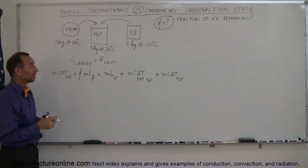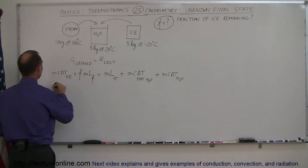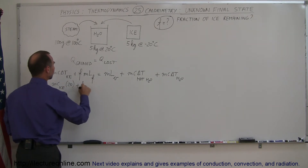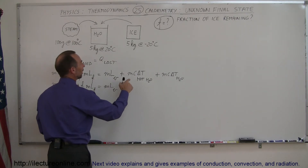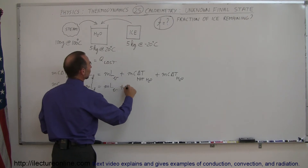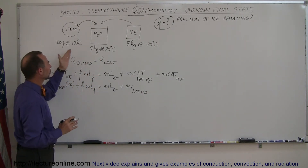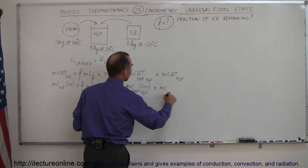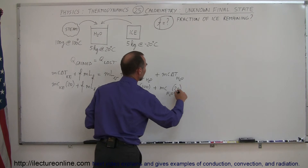Now we find the delta T values. Remember, each term on both sides of the equation must be a positive quantity. The ice goes from minus 20 to zero, so delta T is 20 centigrade degrees. The steam-derived hot water goes from 100 to zero, so delta T is 100 centigrade degrees. The cold water in the bucket goes from 20 to zero — since we assume the final temperature is zero — so delta T is also 20 centigrade degrees.